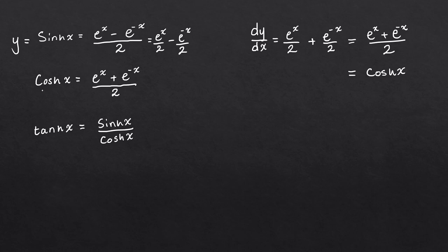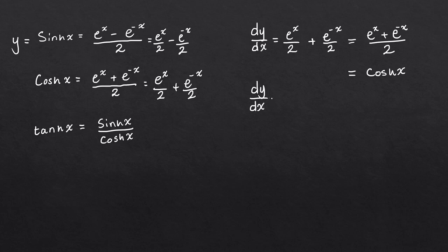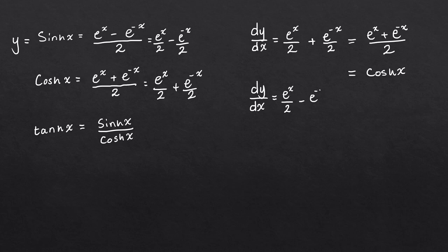Let's consider the same with hyperbolic cosine. We can write cosh x as e to the x over 2 plus e to the minus x over 2. Differentiating term by term: e to the x over 2 differentiated gives e to the x over 2. And e to the minus x over 2, being very careful with the minus, gives minus e to the minus x over 2. So dy/dx is e to the x over 2 minus e to the minus x over 2, which is exactly sinh x. So if you differentiate cosh x, you get sinh x.